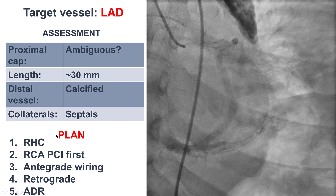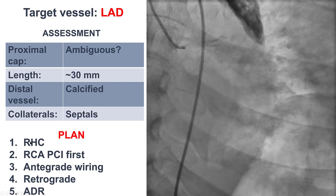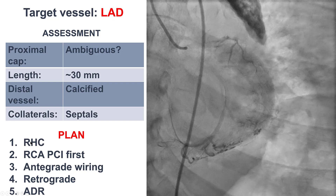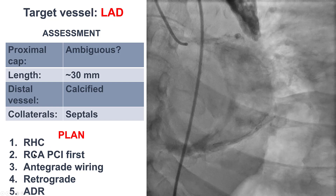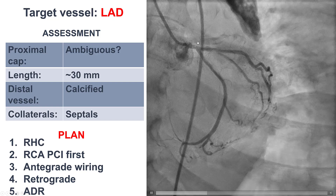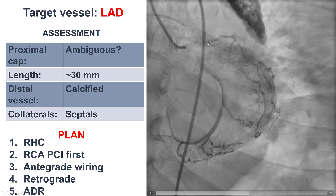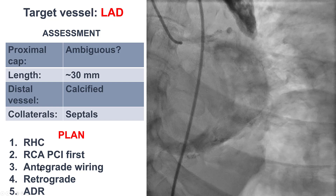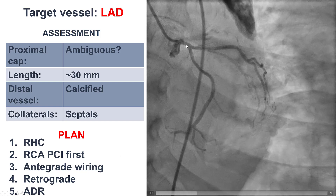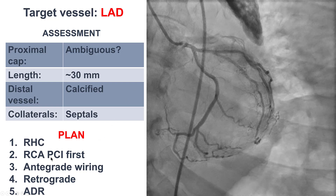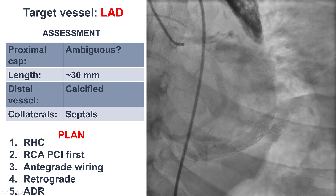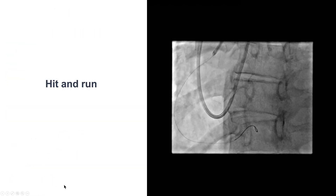The plan was to first perform right heart catheterization to determine the need for hemodynamic support given two-vessel disease with reduced ejection fraction, then proceed with PCI of the right coronary artery first, and then attempt PCI of the LAD CTO. The plan was to first try antegrade wiring to see if the nub was truly leading into the LAD. If that didn't work, proceed retrograde through the right coronary artery, or alternatively use antegrade dissection re-entry.